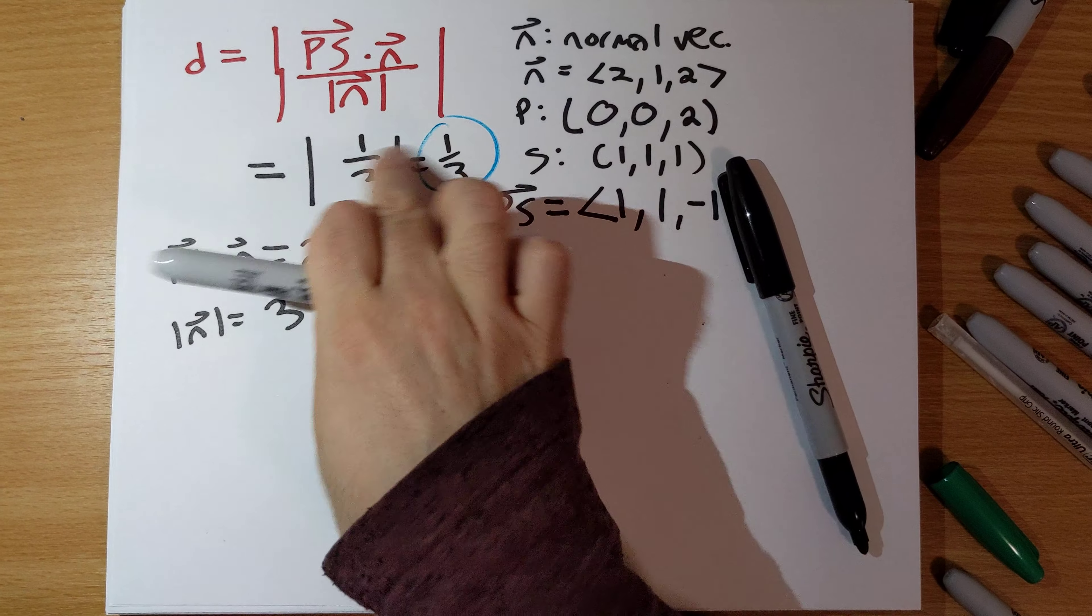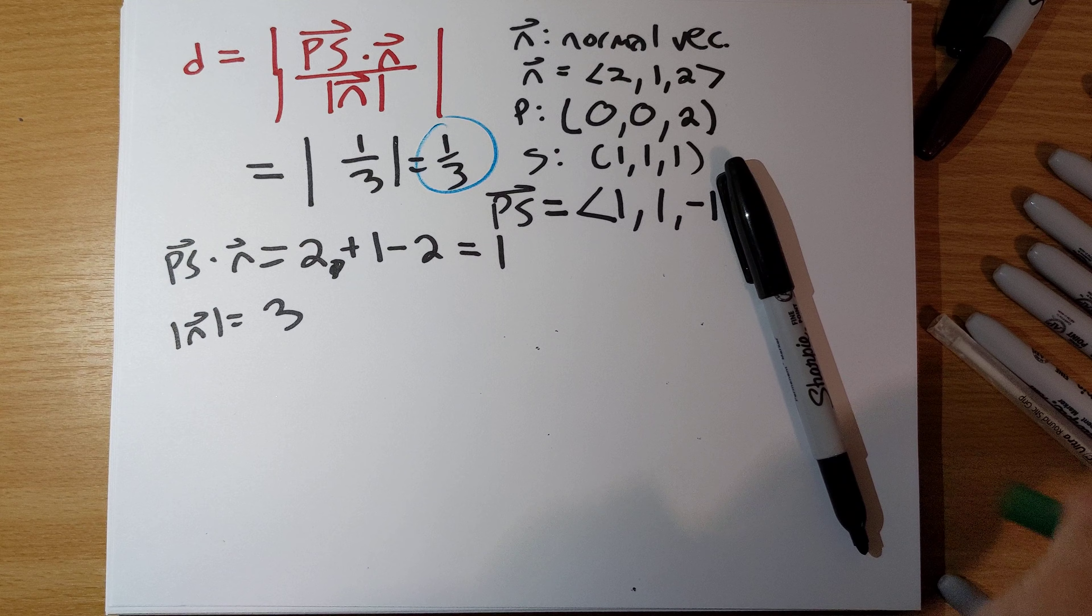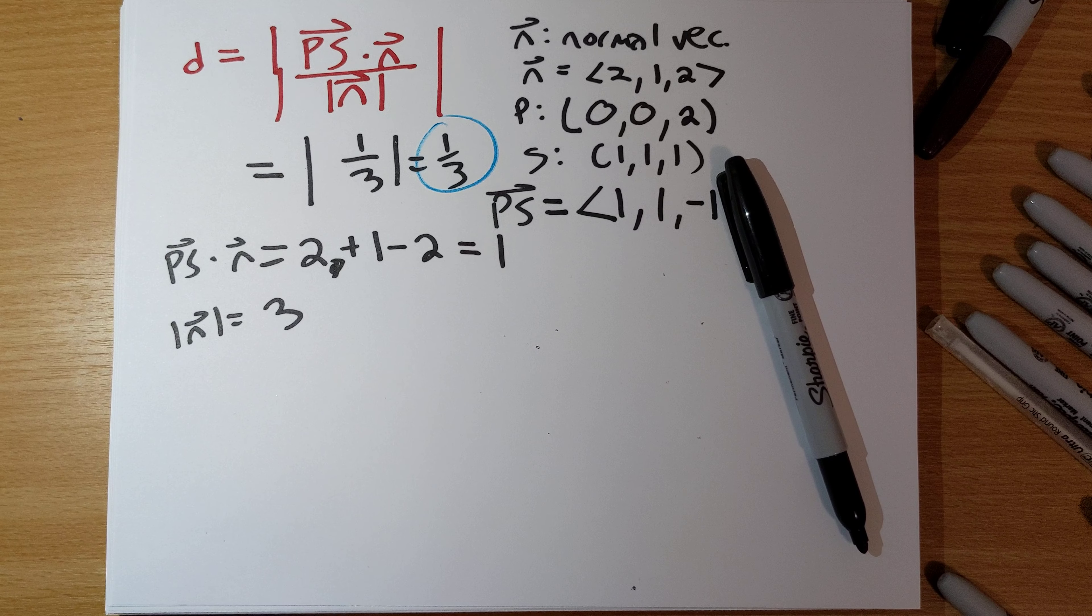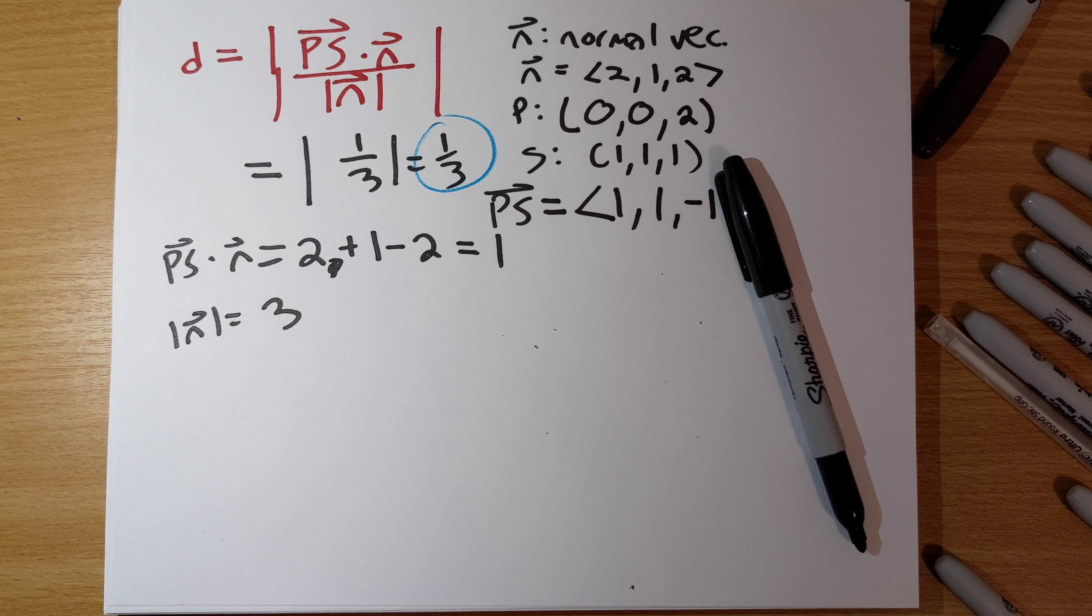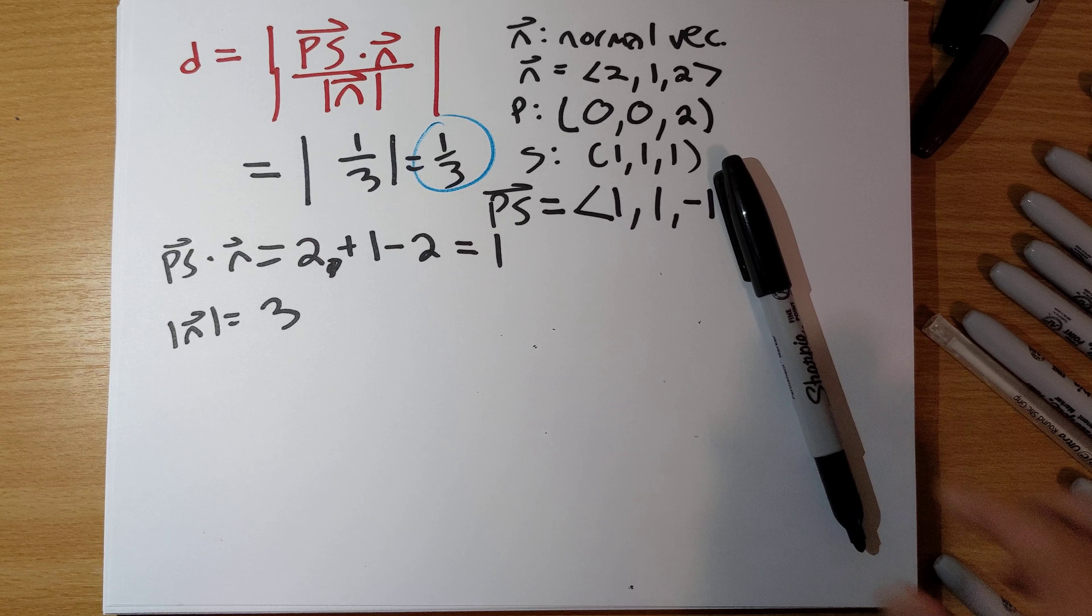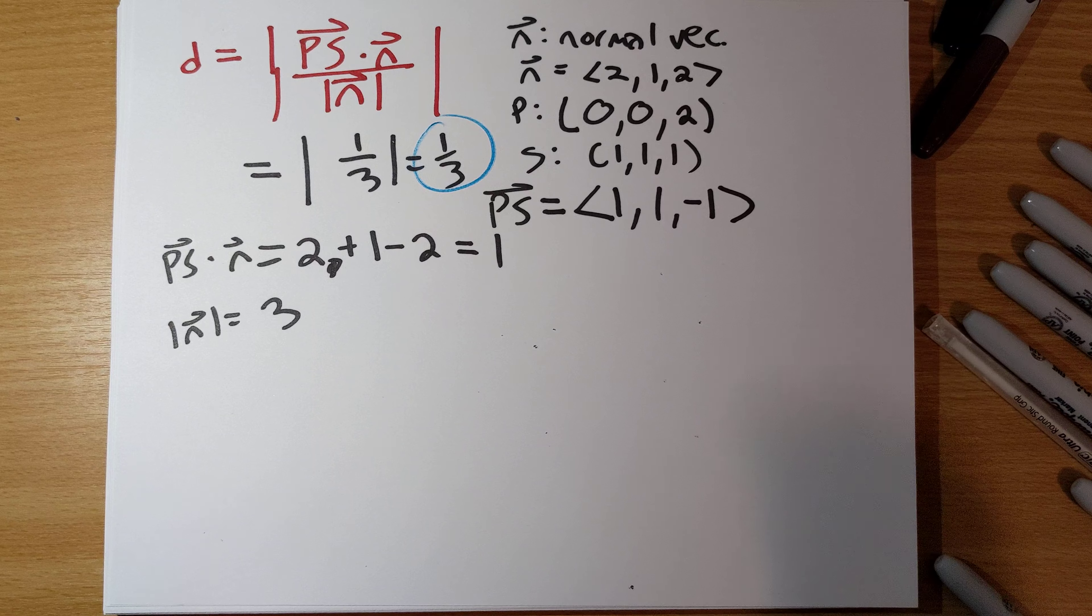So, the absolute value bars are there because it's possible that the dot product ends up being negative, but we don't want there to be a negative distance. We want the distance to always be positive. Okay, so that is how we do problem 19.